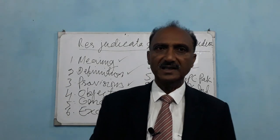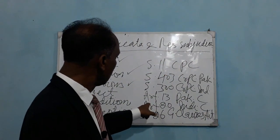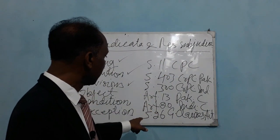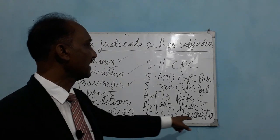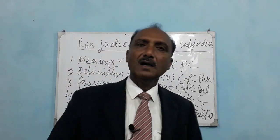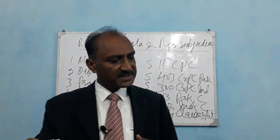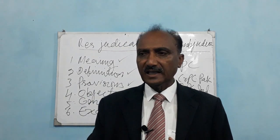Section 26 of the General Clauses Act also addresses this — if a person has committed an offence, you can only try them in one place and should not give double punishment.